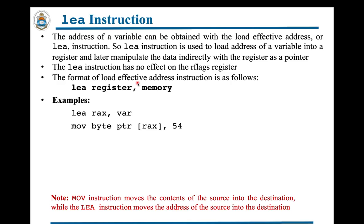After the MOV instruction, here is the LEA (load effective address) instruction. LEA is normally used to load the address of a variable into a register and, like MOV, has no effect on the flags register. In this example, the address of the variable 'var' is moved inside RAX, and then in the second instruction, the immediate value 54 is moved to the memory address pointed to by RAX.